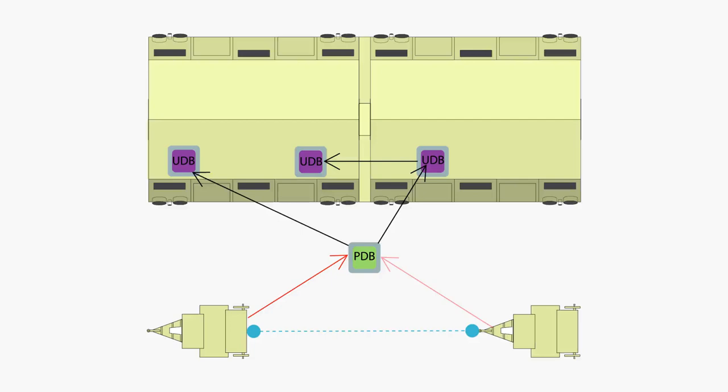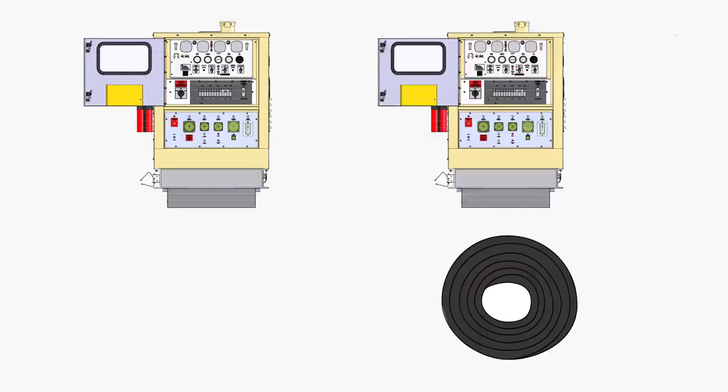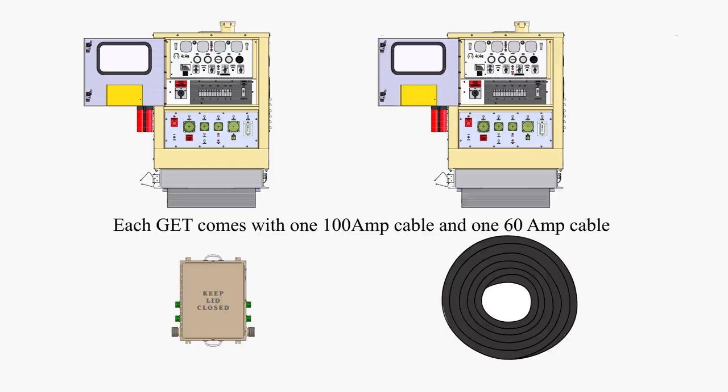For load sharing you need a few extra things: two gets, one parallel cable, and one power distribution box or PDB. Some power cables come with your get.